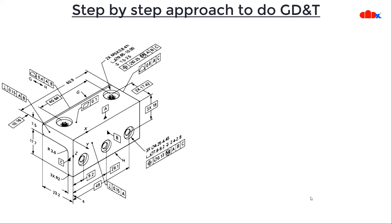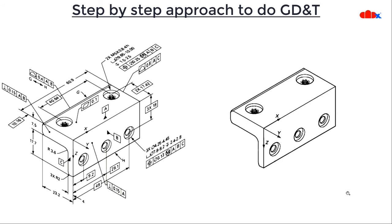Now let's understand the step by step approach. The first thing is to place the 2D views in your drawing. In my case I've placed a 3D view for better understanding, but you will be placing 2D views. Once the 2D view is placed, you need to decide which surface you are going to place on the inspection table. The moment you decide that surface, it has to be a perfect surface, and that is why we apply flatness to it.